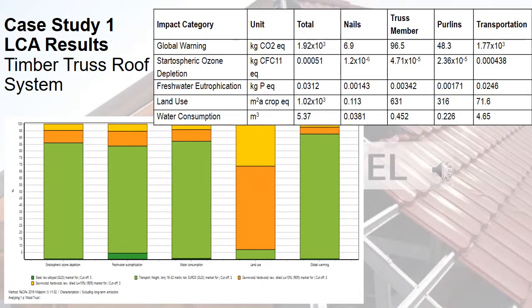The first case study assesses the environmental performance of the timber truss roof framing system. By analyzing the results, it can be observed that transportation and sawn timber elements used for truss members and purlins have the most important contribution to the overall impact. Transportation has the biggest negative impact in the case of global warming potential as well as other environmental parameters, except for land use, where sawn timber elements have a big impact.